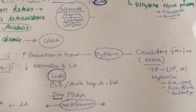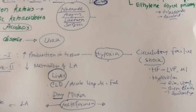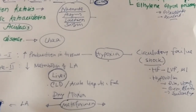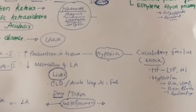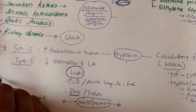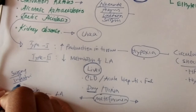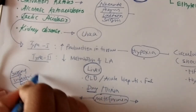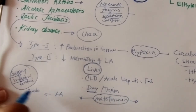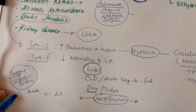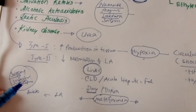Not all patients taking metformin develop lactic acidosis. Mostly diabetic patients on metformin who go through a stressful condition — like surgery, intercurrent infection, or fasting — are prone to develop metformin-induced lactic acidosis. Multiple cofactors are also involved.